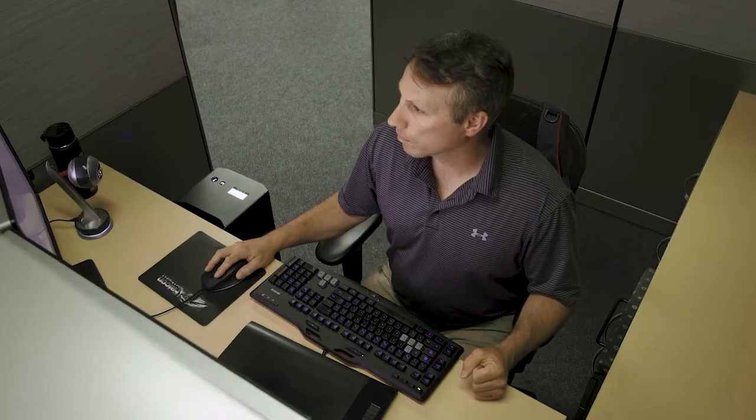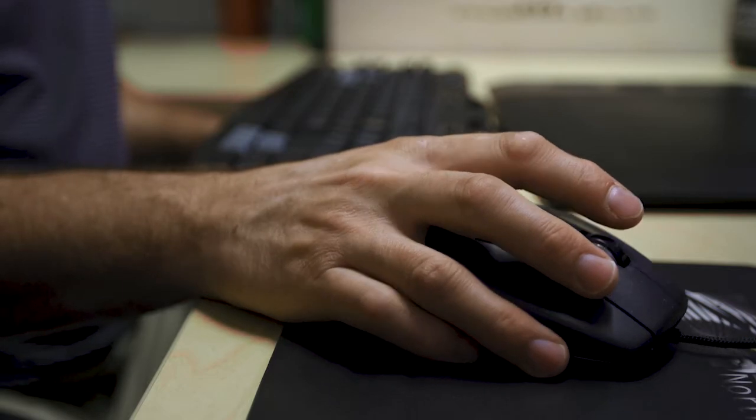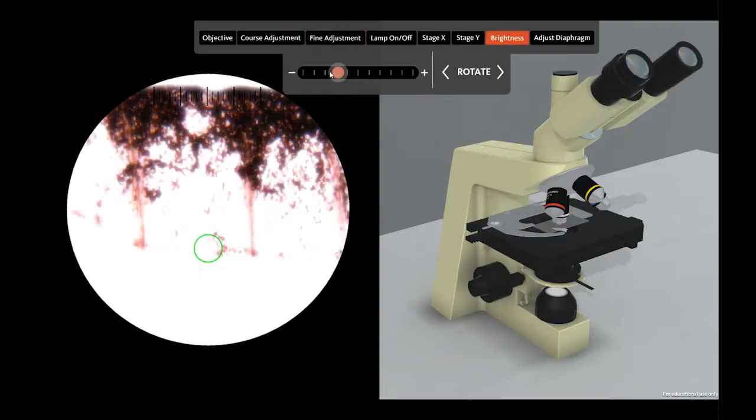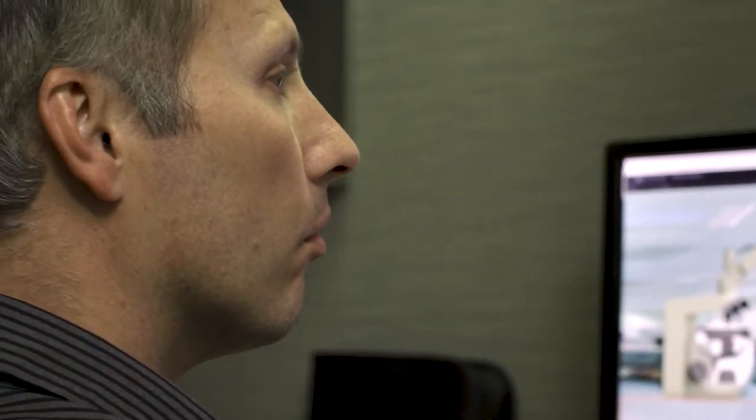So once we had the 3D model completed I put it into our game development software to animate, program the user interface buttons, and the functional components of the microscope so that the student could change the brightness, the magnification, focus, and all the other controls.